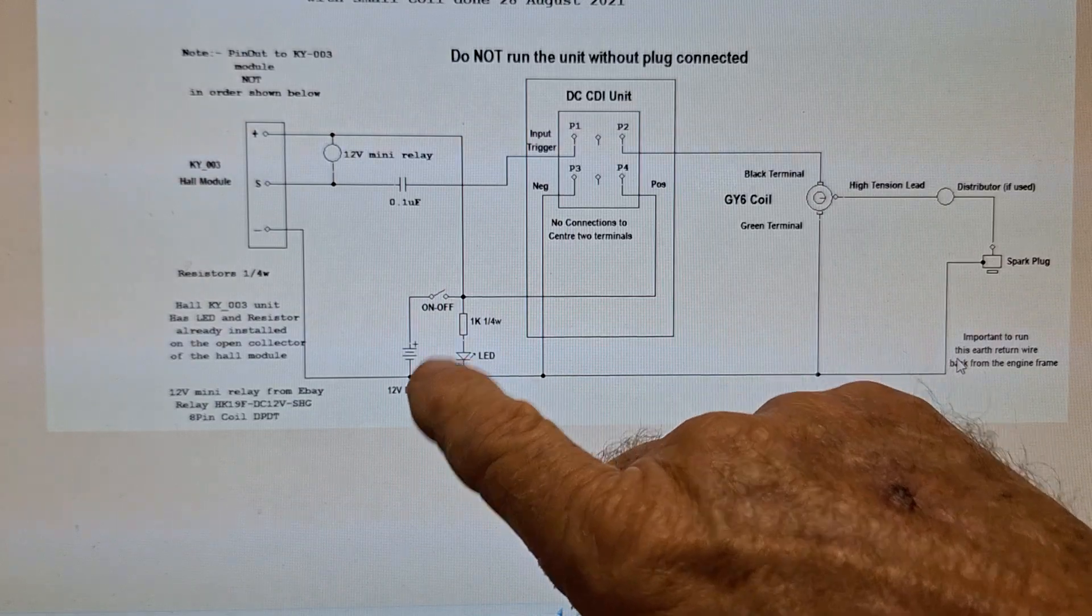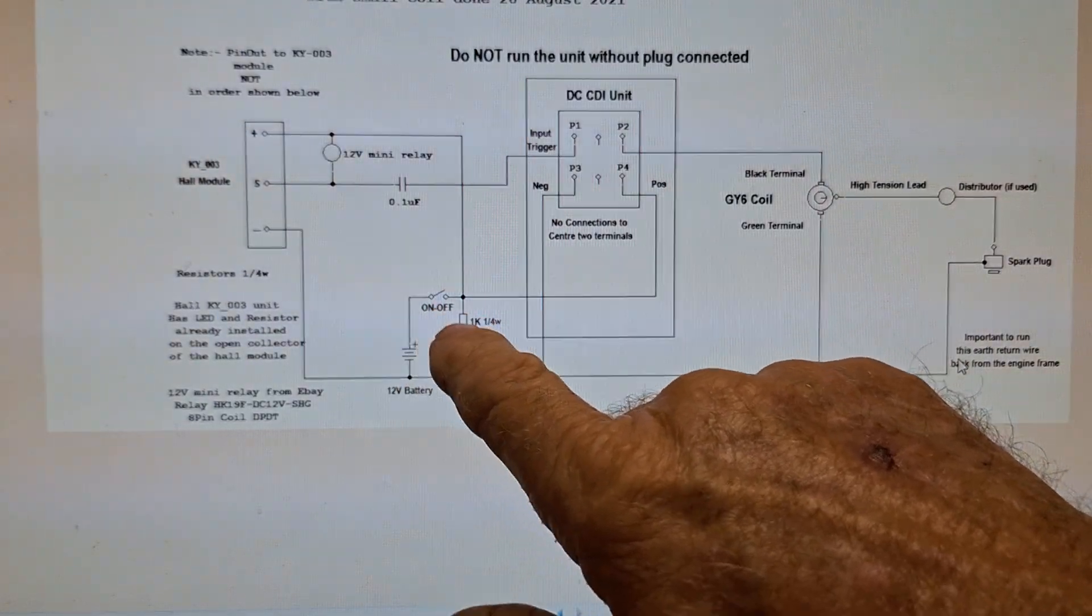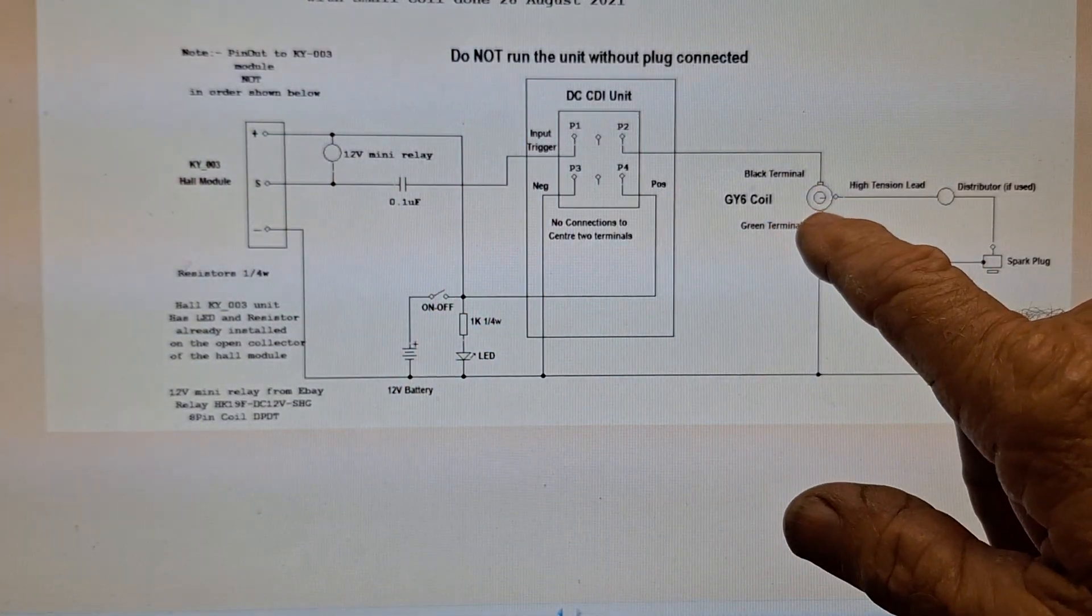This is an additional LED if you need it. The main battery on or switch. GY6 coil over here.